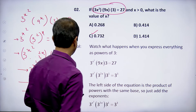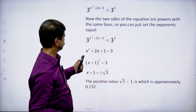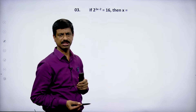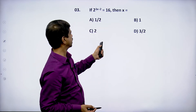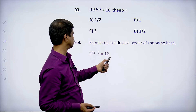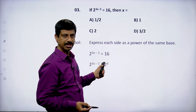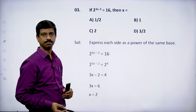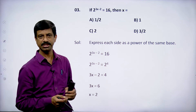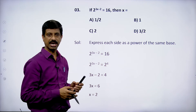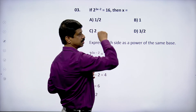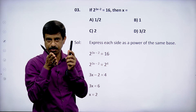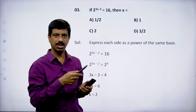Let us move to the next question. If 2^(3x-2) = 16, then x = ? This is a very simple problem. 16 = 2^4, so 2^(3x-2) = 2^4. Bases are same, so powers are equated: 3x - 2 = 4, 3x = 6, x = 2.